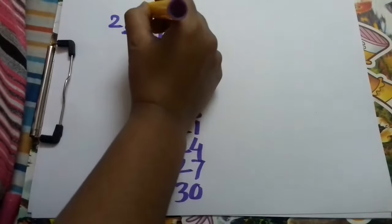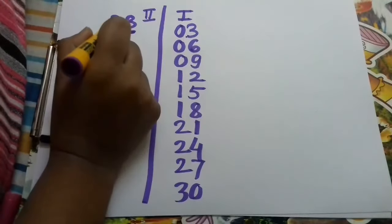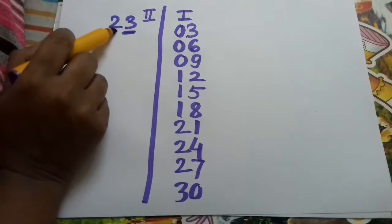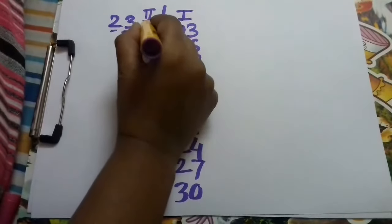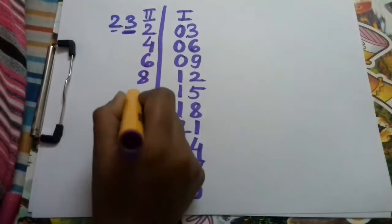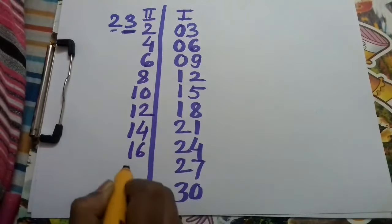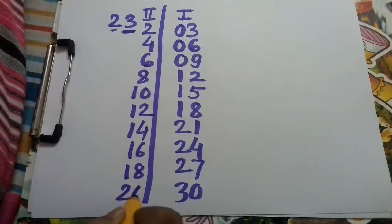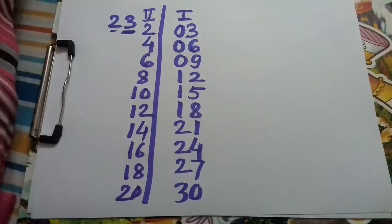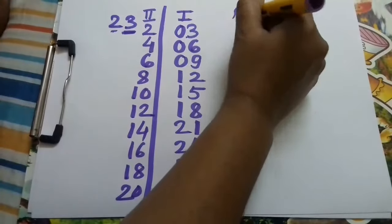Now the second step: write down the table of 2. We will write down 2, 4, 6, 8, 10, 12, 14, 16, 18, 20.